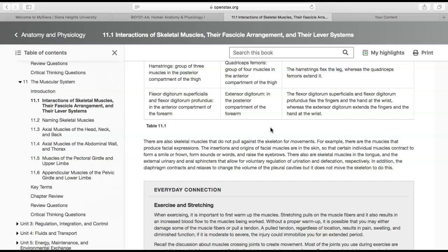There are also skeletal muscles in the tongue and the urinal and anal sphincters, which allow for voluntary regulation of urination and defecation. All of those muscles have no attachment to any bones. In addition, the diaphragm contracts and relaxes to change the volume of the pleural cavities, but it doesn't move the skeleton to do this. That's the first section of 11.1. Let's get into the next section now.